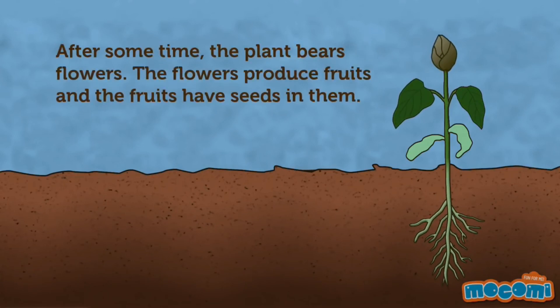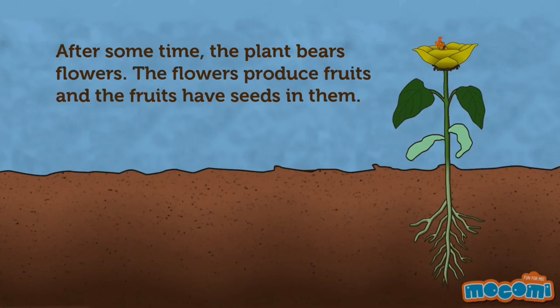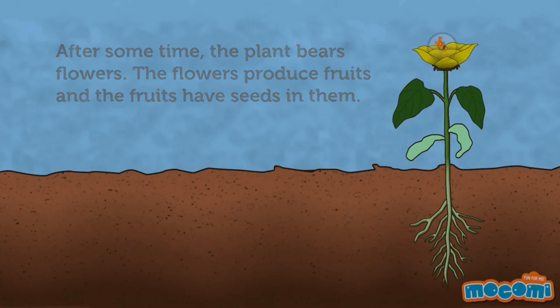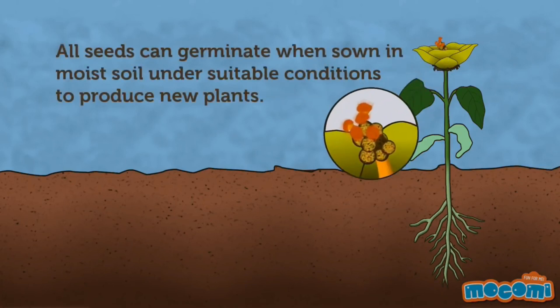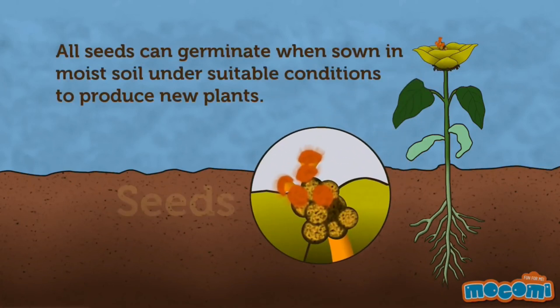The seedling ultimately grows into a new plant. After some time, the plant bears flowers. The flowers produce fruit, and the fruits have seeds in them. All seeds can germinate when sown in moist soil under suitable conditions to produce new plants.